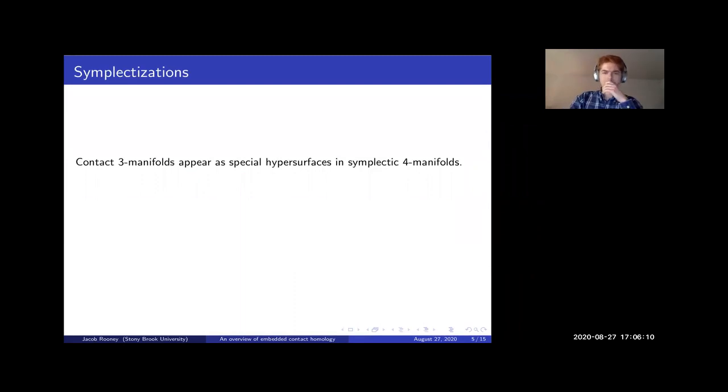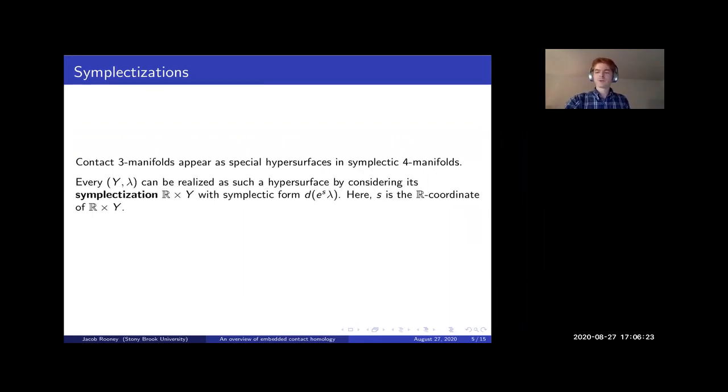So how are these two things related? I said they were cousins. These contact manifolds appear as special hypersurfaces in symplectic manifolds. What special means is not particularly relevant for this talk. But we can realize any contact manifold as such a hypersurface by considering its symplectization. So we take a product with a real line and we take the contact form lambda and make a symplectic form on R cross Y by taking D of e to the S times lambda. And S is the coordinate of the R factor. And then we can get back to our original contact manifold by looking at the slice of the symplectization at S equals zero. So this is one way that symplectic manifolds and contact manifolds are related to each other.